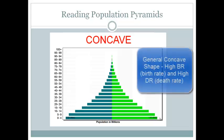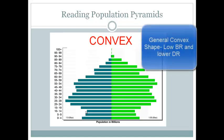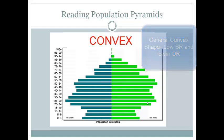There are two basic shapes for population pyramids. The first is concave. In a concave pyramid, you're going to have a wide base indicating a high birth rate and not very many people reaching an older age, which indicates a high death rate. The opposite is convex. In a convex population, the birth rate slows and you can notice this by the bars being shorter than the previous ones.